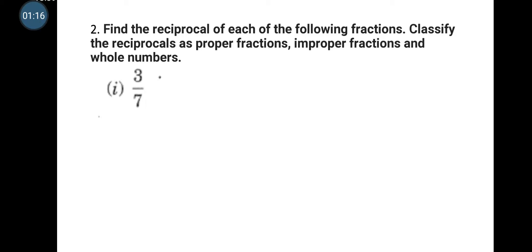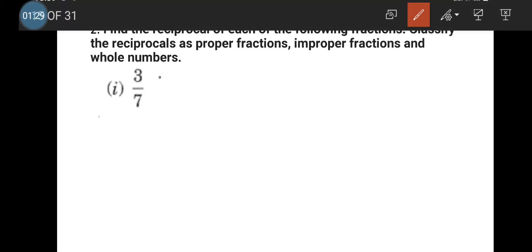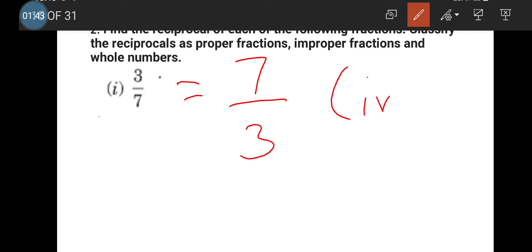Next problem: find the reciprocal of each of the following fractions and classify the fraction as proper fraction, improper fraction, or whole number. We have to take the reciprocal and say what kind of fraction it is. For 3/7, the numerator 3 will go to the denominator and the denominator 7 will go to the numerator, giving us 7/3. This is an improper fraction.